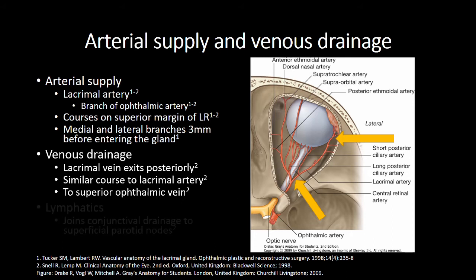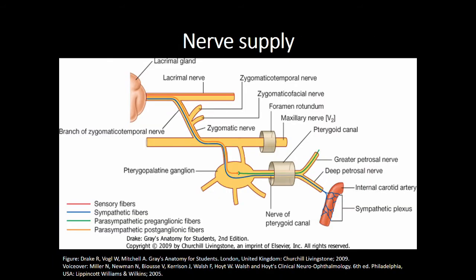Lymphatic drainage of the gland joins that of the conjunctiva and passes to the superficial parotid nodes. In terms of nerve supply, sensory fibres to the lacrimal gland travel in the lacrimal nerve, a branch of the ophthalmic division of the trigeminal nerve.